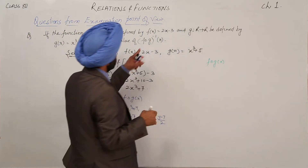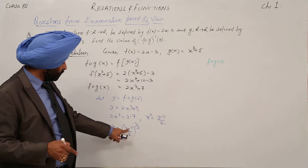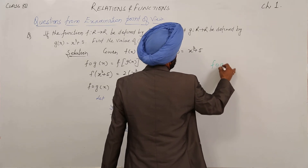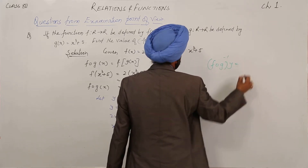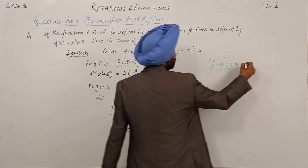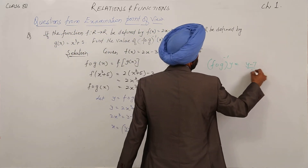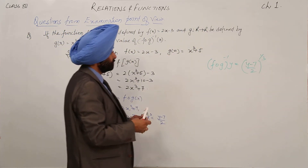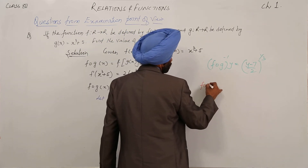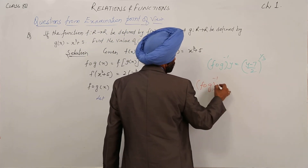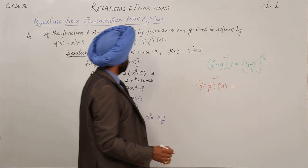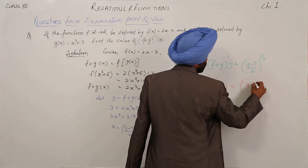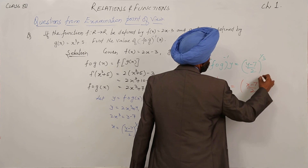We can write fog inverse of y = ((y minus 7) upon 2) raised to power 1 by 3. Replacing y with x, fog inverse of x = ((x minus 7) upon 2) raised to power 1 by 3.